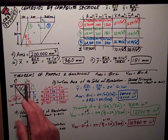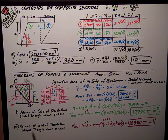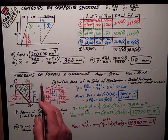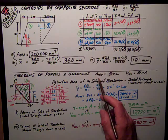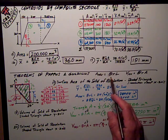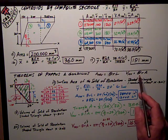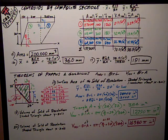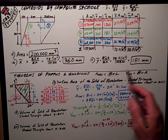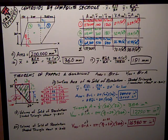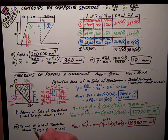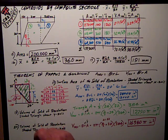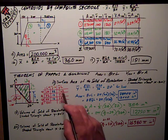Theorems of Pappus and Guldinus was the last part. I had three questions on this. Once again, I see theorems of Pappus and Guldinus, and I write down the equations associated with it: A-rev equals theta r-L, V-rev equals theta r-A. Hopefully you're familiar with those, what those components are.